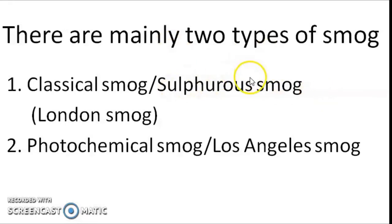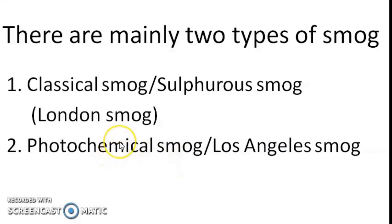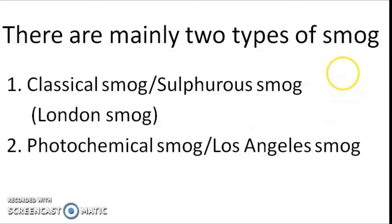It is called sulphurous smog because it has got oxides of sulphur. It is called reducing smog because the sulphur dioxide present in it is reducing in nature. It is called London smog because it was first observed in London in 1952. Similarly, photochemical smog is called so because its components are formed via photochemical reactions. It is called Los Angeles smog because it was first observed in Los Angeles. It is also called oxidizing smog because the oxides of nitrogen and ozone in it are oxidizing in nature.